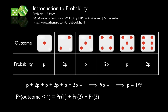The probability that the outcome is less than 4 is the probability of rolling a 1, plus the probability of rolling a 2, plus the probability of rolling a 3. These are disjoint events, so we sum them: P + 2P + P = 4P = 4/9.